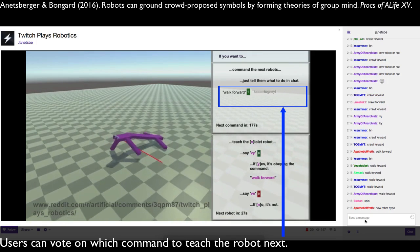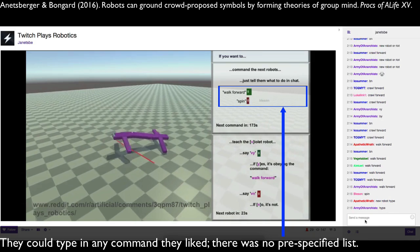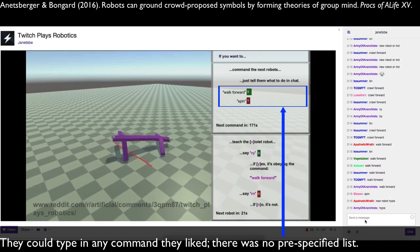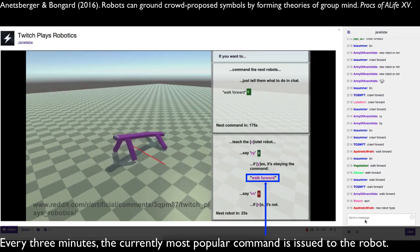Users can vote on which command to teach the robot next. They could type in any command they liked. There was no pre-specified list. Every three minutes, the currently most popular command is issued to the robot.